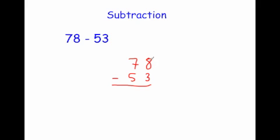Now let's do the subtraction. We start with the right and we do 8 subtract 3, which is 5. Next, 7 subtract 5 is 2. And that's it — the answer is 25.